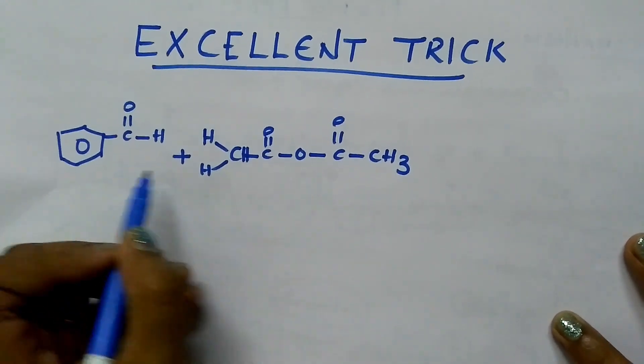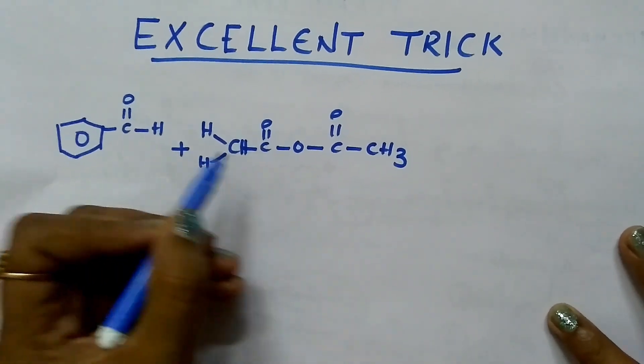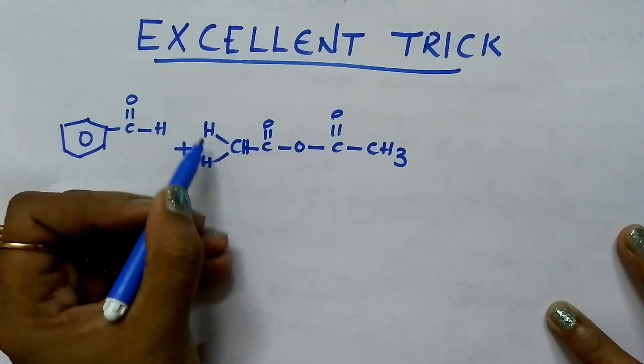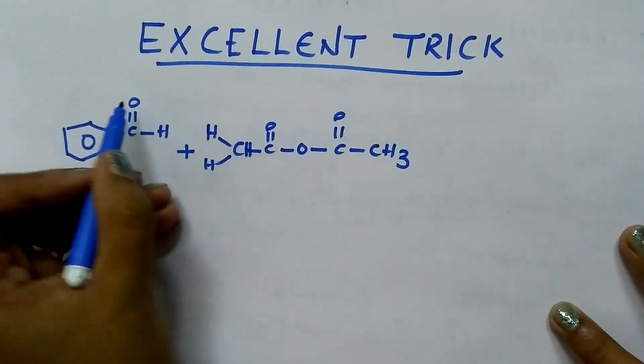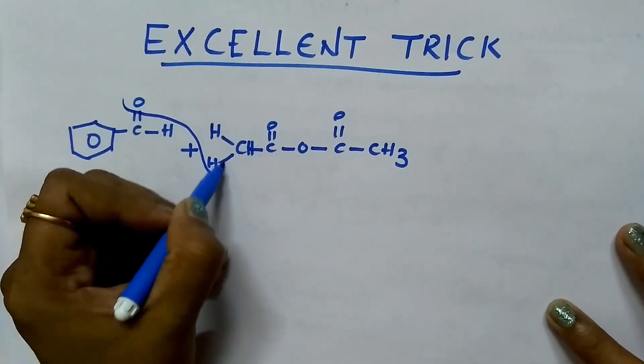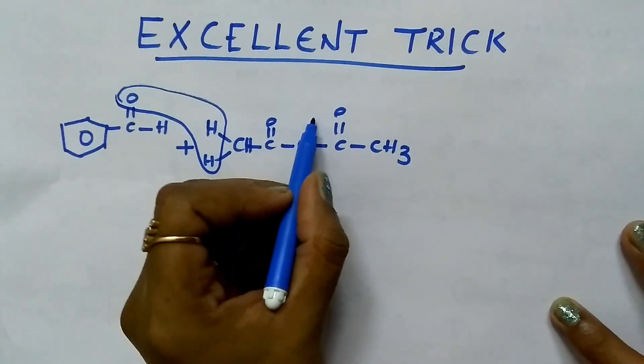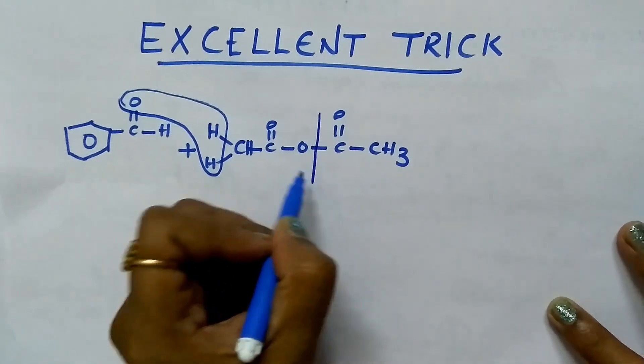This is the benzaldehyde, this anhydride I am writing in the form like two hydrogens I wrote separately. Remove the water molecule from this and add that water molecule here.